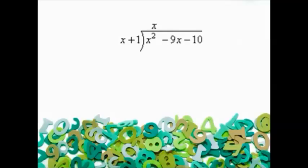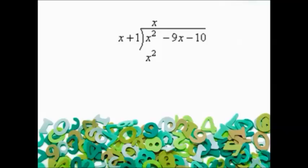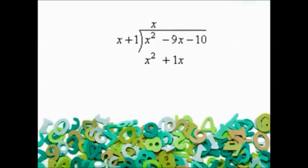Now, I'll take that x and multiply it through the divisor x + 1. First, I'll multiply the x on top by the x on the side and carry the x² underneath. Then, I'll multiply the x on top by the 1 on the side and carry an x underneath.